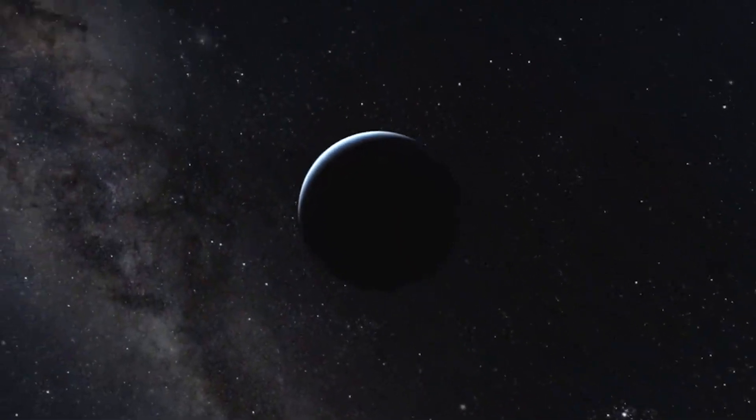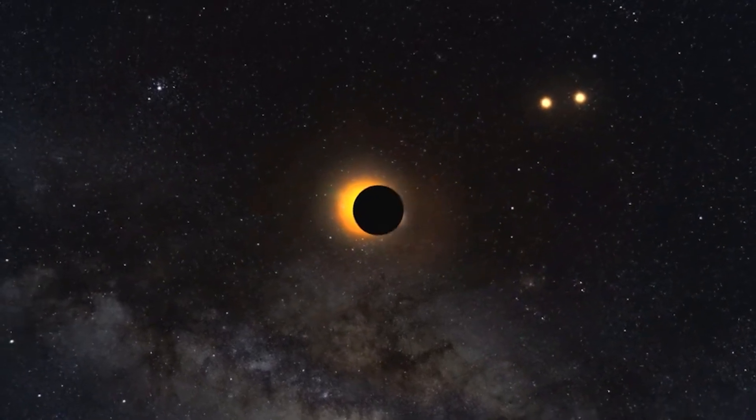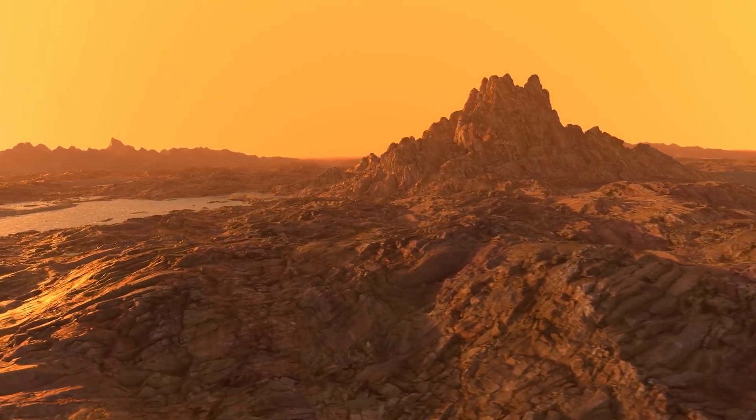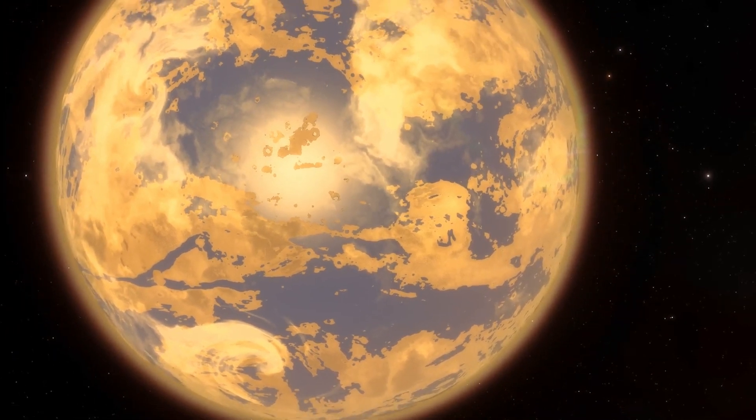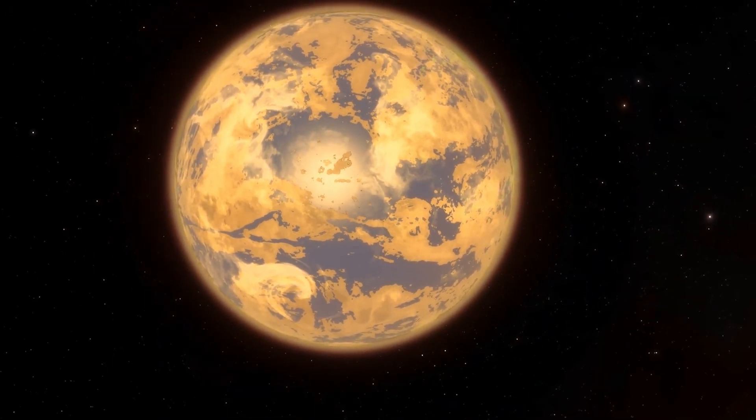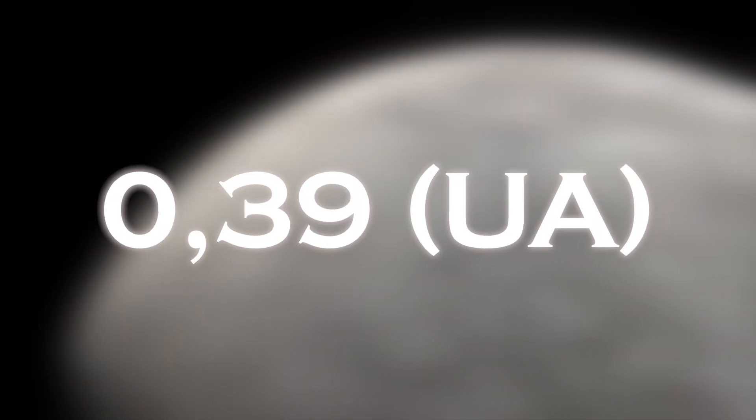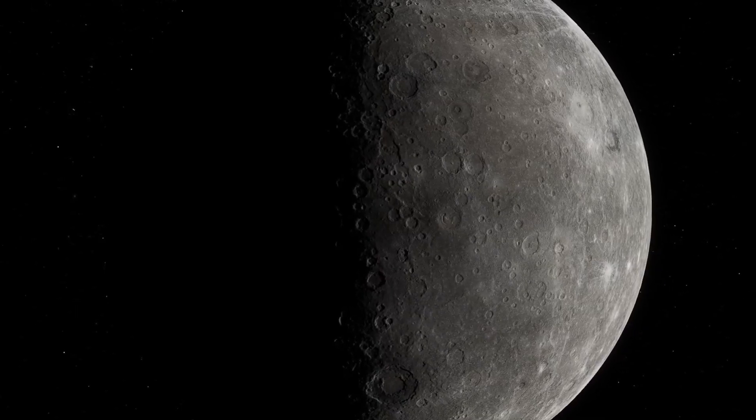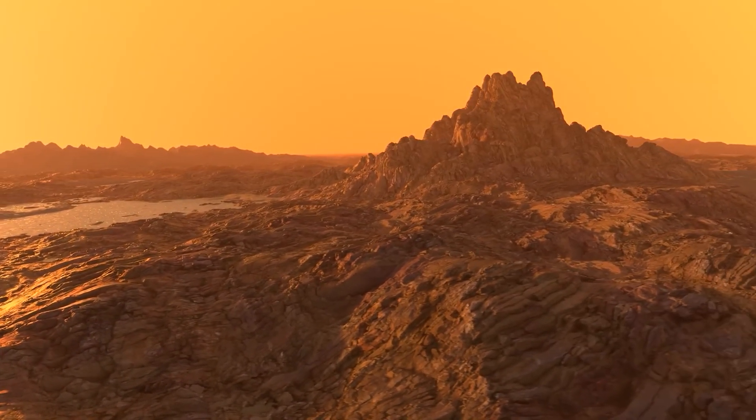On closer examination, Proxima b turns out to be very similar to Earth, with a radius 1.1 times that of Earth and a mass 1.3 times that of Earth, indicating that it is a rocky world with an equivalent density. However, there are significant differences. The first is the location of the two planets in their respective solar systems. Proxima b is much closer to its parent star, at only 0.05 AU, while Mercury is at a distance of 0.39 AU from the Sun. This proximity would make Proxima b an extremely hot planet, but because Proxima Centauri is a dim red dwarf, the planet receives only 60% of the energy that the Earth receives from the Sun, placing it in the habitable zone where life could exist.